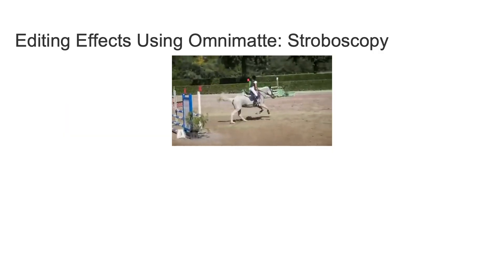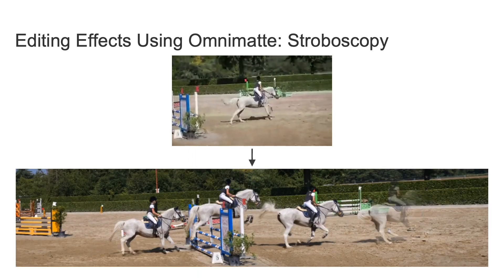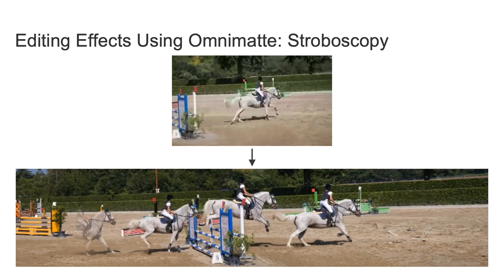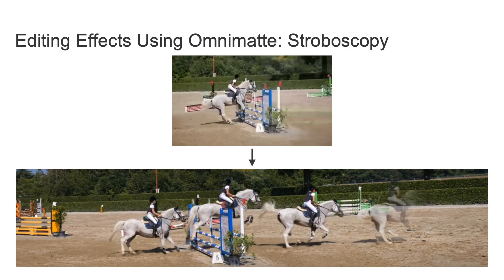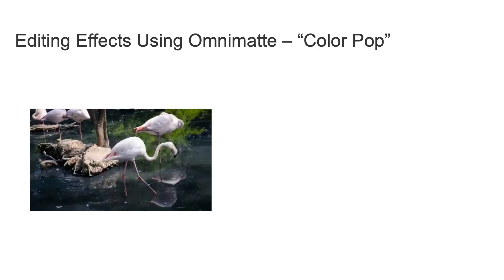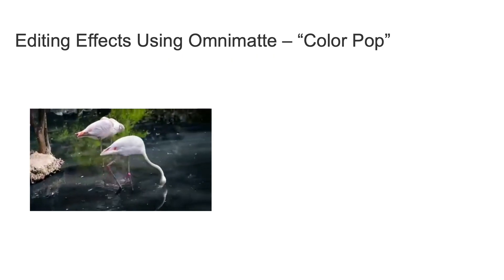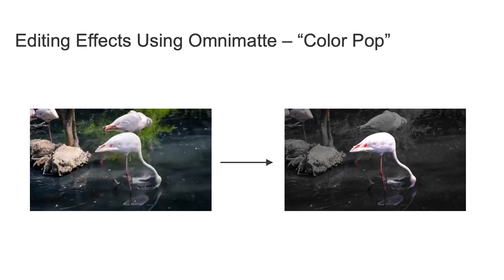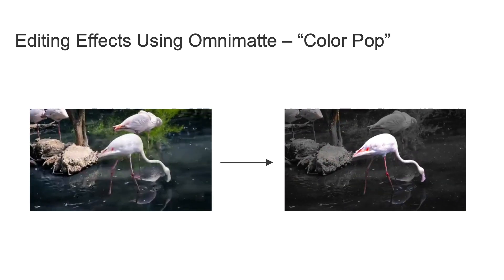Here are some fun editing effects you can create with the predicted omnimats, like stroboscopy — notice the shadow is realistically duplicated along with the horse and rider. We also demonstrate a color pop effect to create emphasis by colorizing only the flamingo and its reflection.